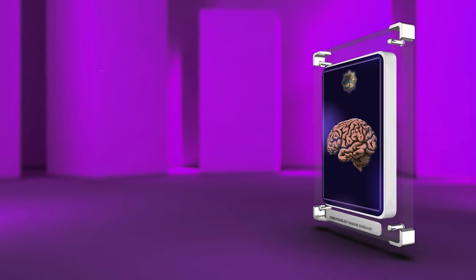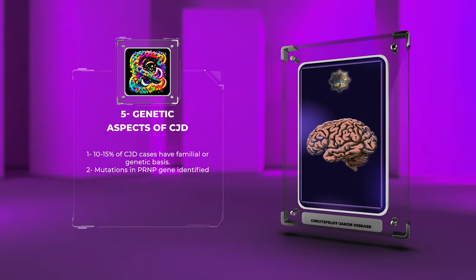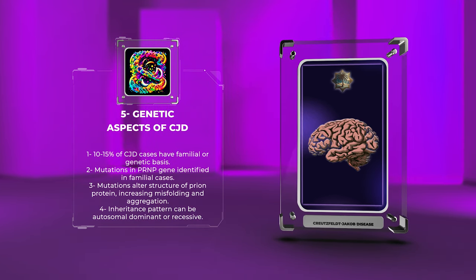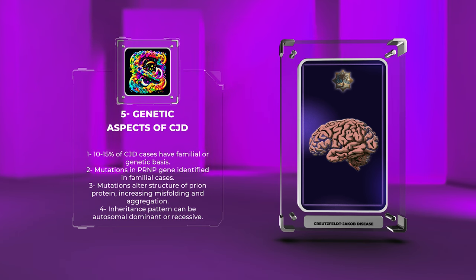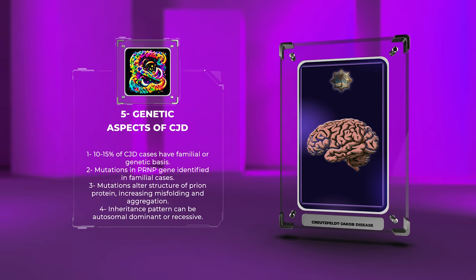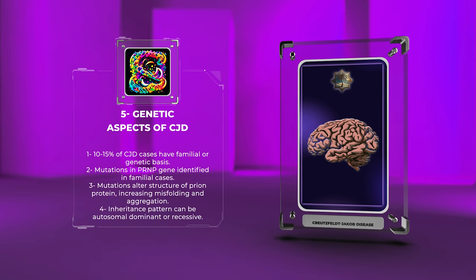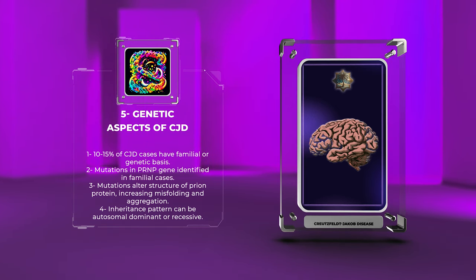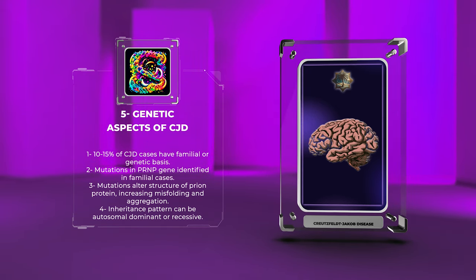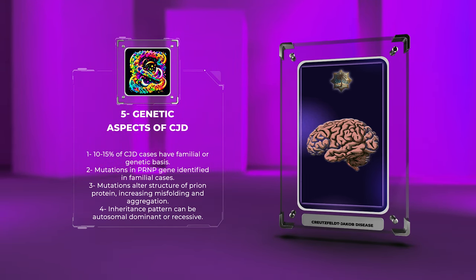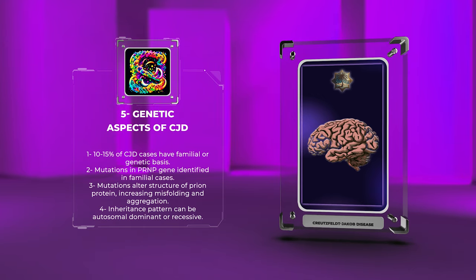While most cases of CJD are sporadic, approximately 10–15% of cases have a familial or genetic basis. Mutations in the PRNP gene, which provides instructions for the production of the prion protein, have been identified in familial cases. These mutations alter the structure of the prion protein, making it more prone to misfolding and aggregation. The inheritance pattern can be autosomal dominant or, less commonly, recessive. Genetic testing can help identify individuals at higher risk of developing CJD and may aid in counseling and prevention strategies for affected families.